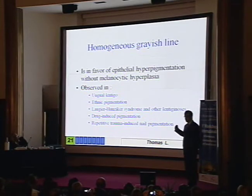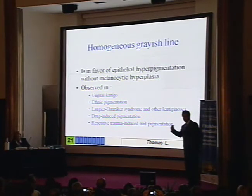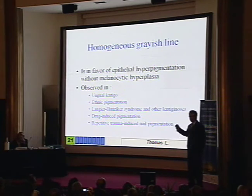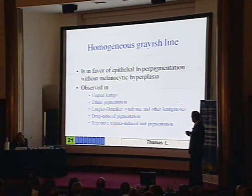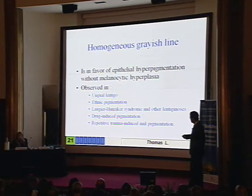This is seen in many conditions. The most common conditions you see on the nail are lentigo, ethnic-type pigmentation, lentiginosis — especially Laugier-Hunziker disease — drug-induced pigmentation, and repetitive trauma-induced nail pigmentation.